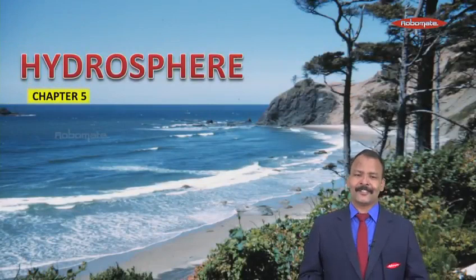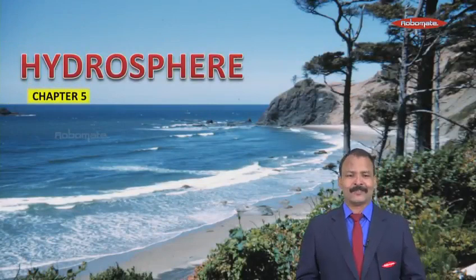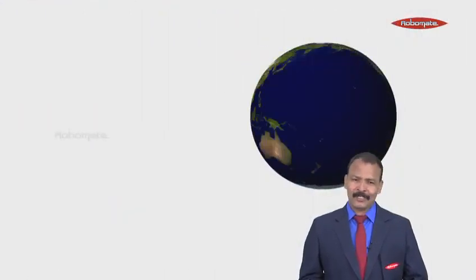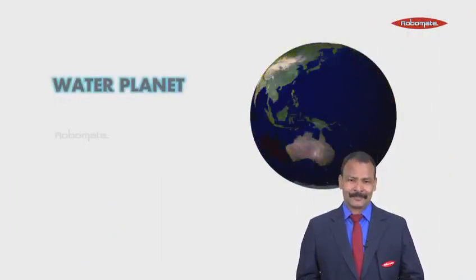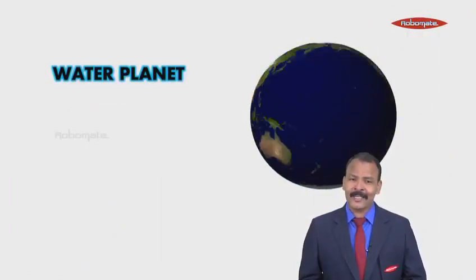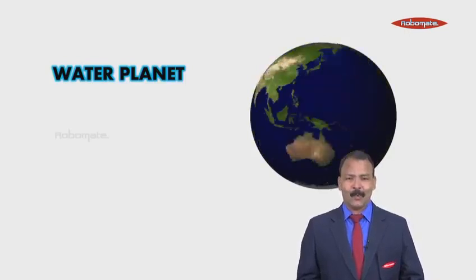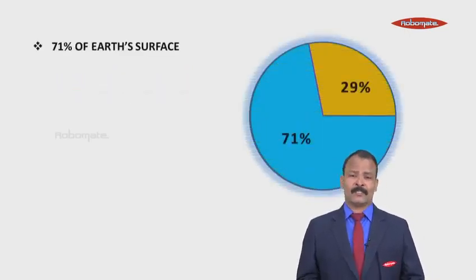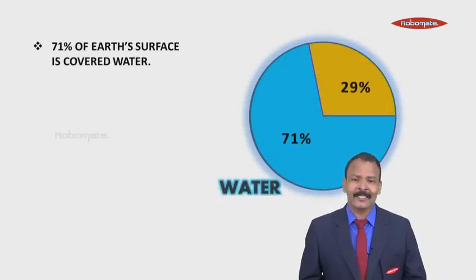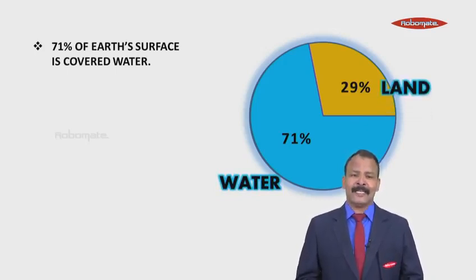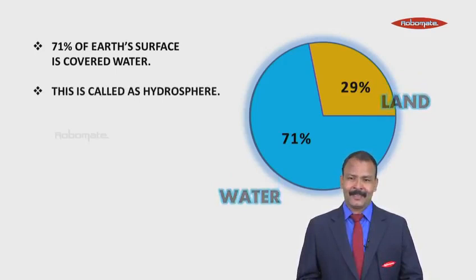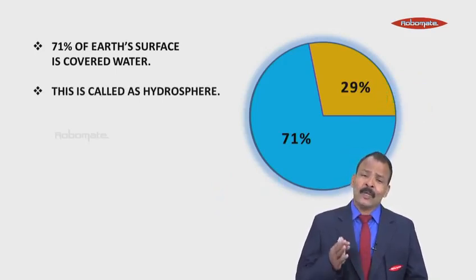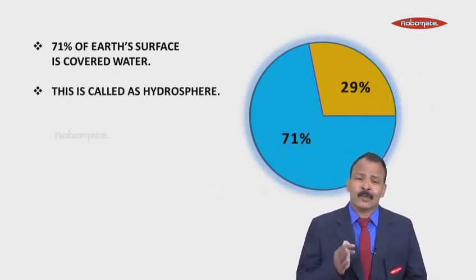Let's learn this interesting chapter: hydrosphere. Planet Earth is called a water planet because 71% of the planet Earth is covered with water, whereas the remaining 29% is land. That is why we also call it the hydrosphere.